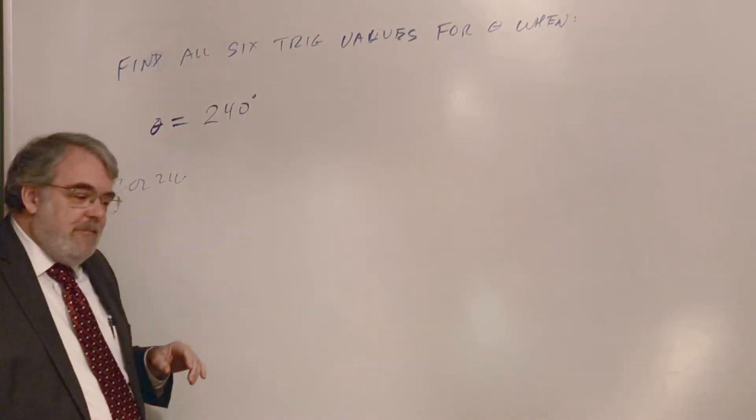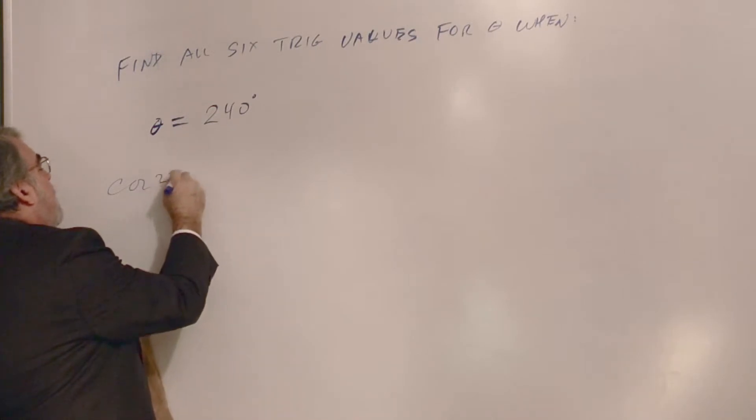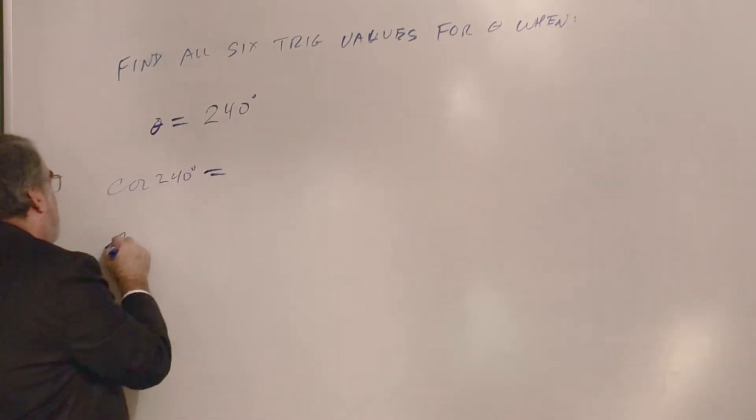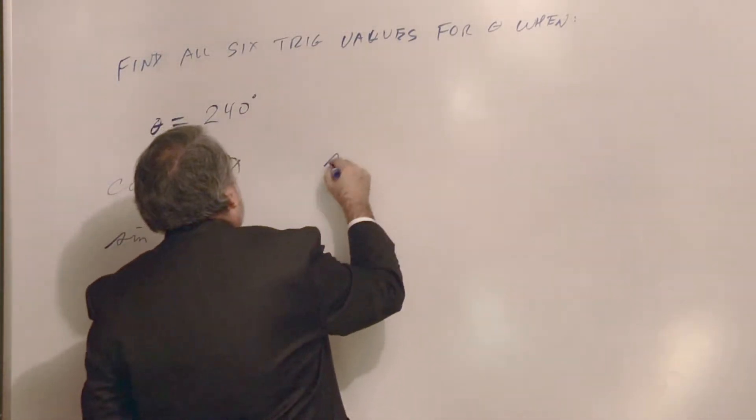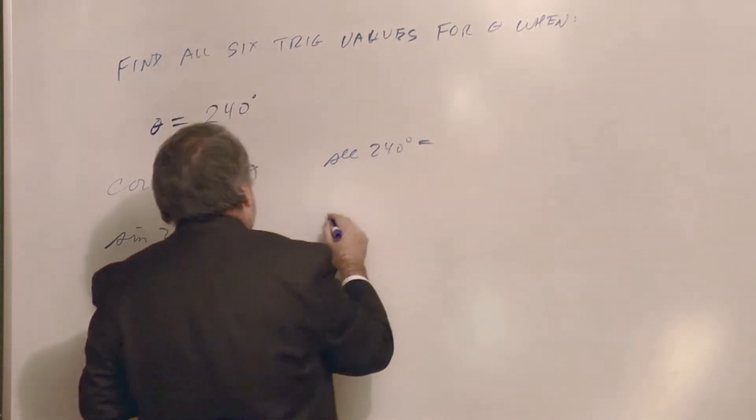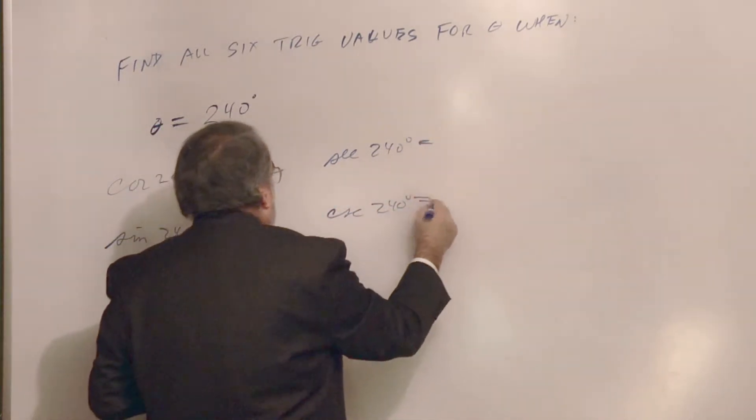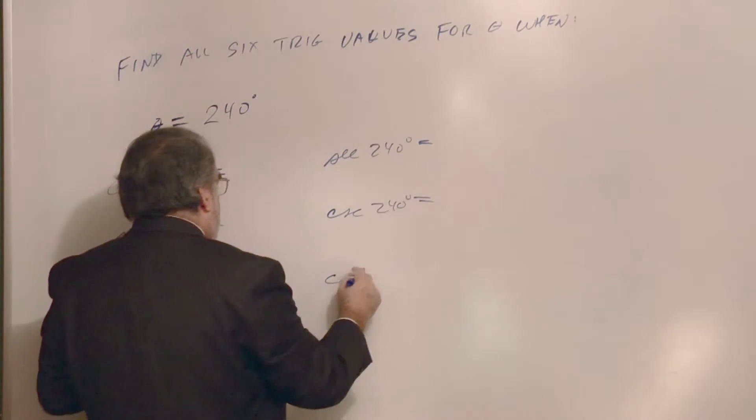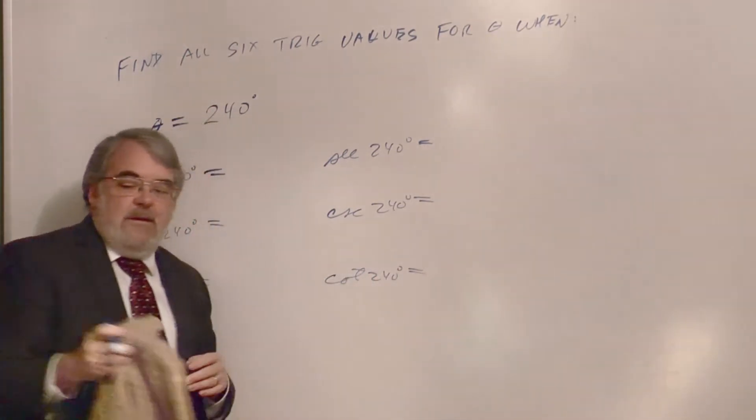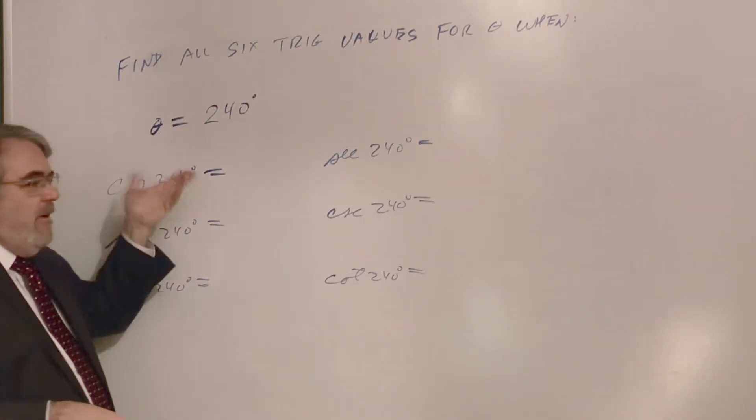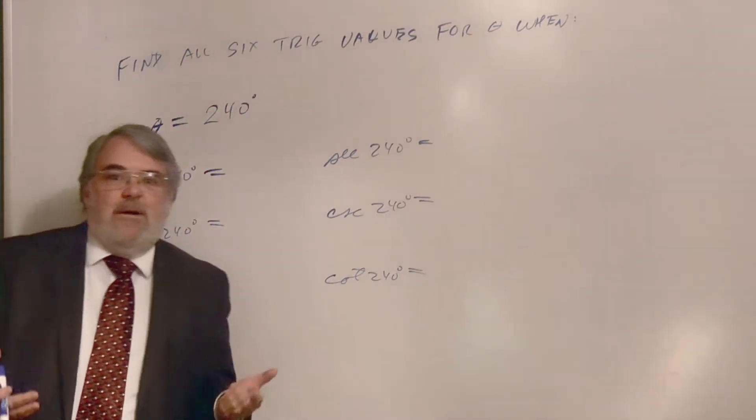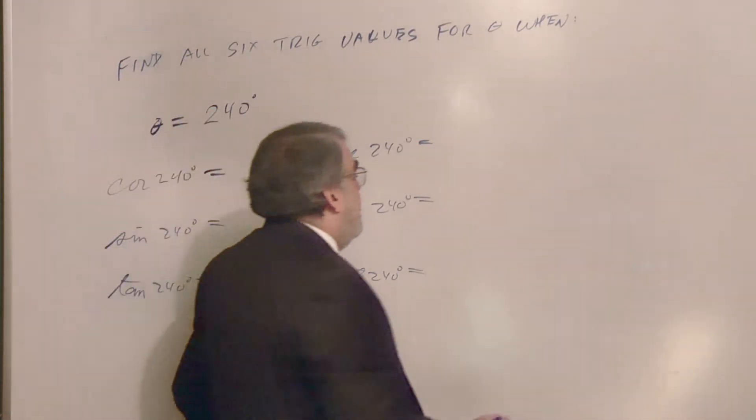I'll go ahead and write cosine 240 degrees, sine 240 degrees is, tangent 240 degrees is, secant of 240 degrees, cosecant 240, and finally cotangent 240. So let's write all those out and put equals here. Don't put cosine 240 than a number. It looks like you're multiplying everything together. Put equal signs in there. That's part of our language of mathematics.